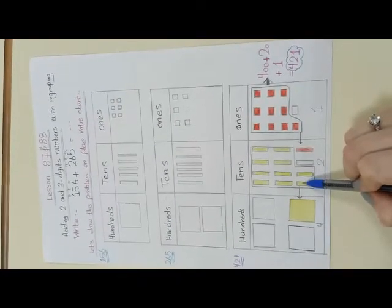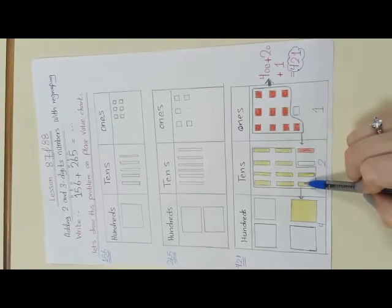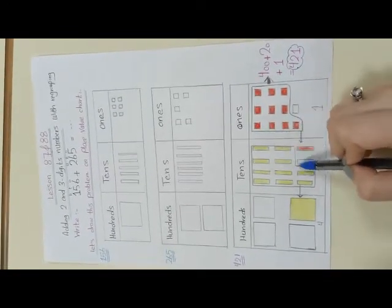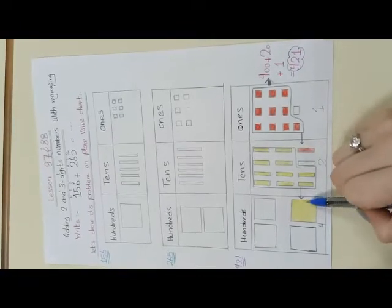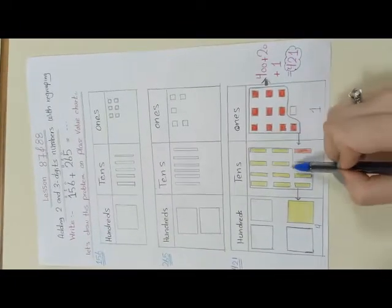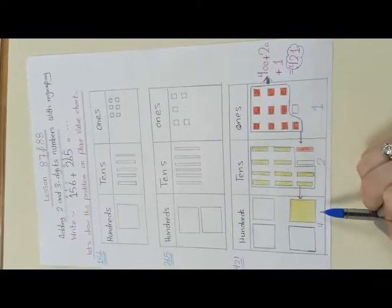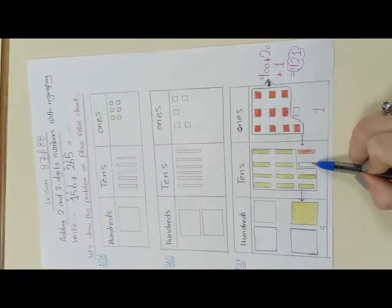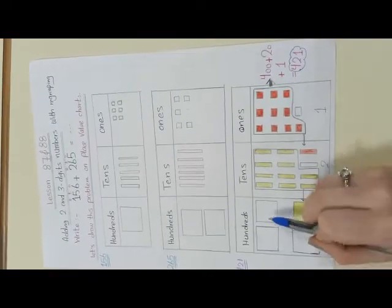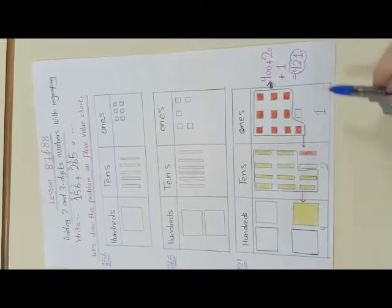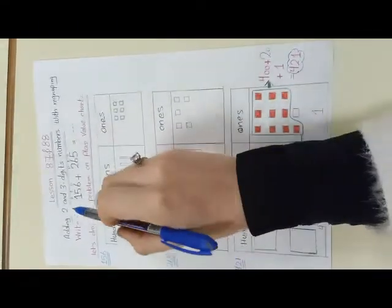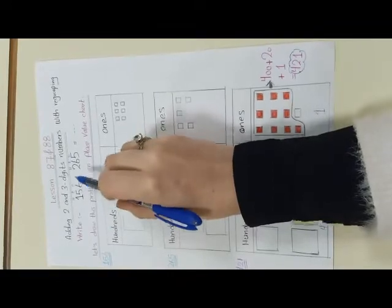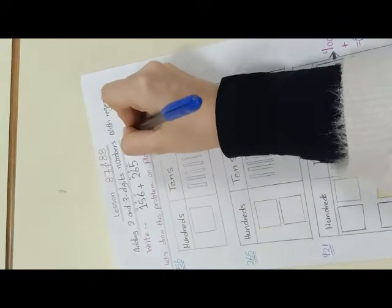Now what will I do? I will regroup 10 tens as 1 hundred. After regrouping, I have just 1 remaining in the tens that doesn't group, and in hundreds I carry over the new group. So the answer will be 421. So 156 plus 265 equals 421.